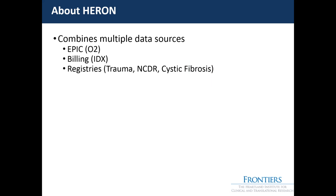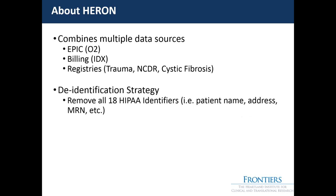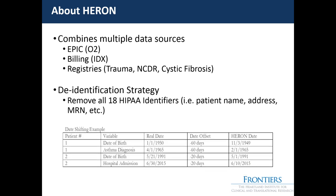We only make HERON available here at KUMC on our secure network or via VPN. Once people have those three credentials they can click on 'Start HERON Search.' The reason to use i2b2 is that it's a way to combine multiple data sources, so users can search all of these data sources for the information they want. We've brought in Epic or O2 data, billing data which used to be built out of IDX, and various registries — our trauma registry, national cardiovascular disease registry, and cystic fibrosis registry.